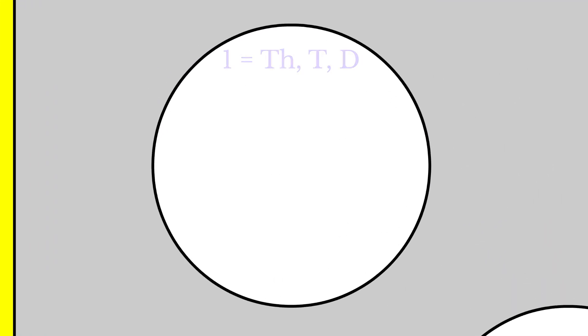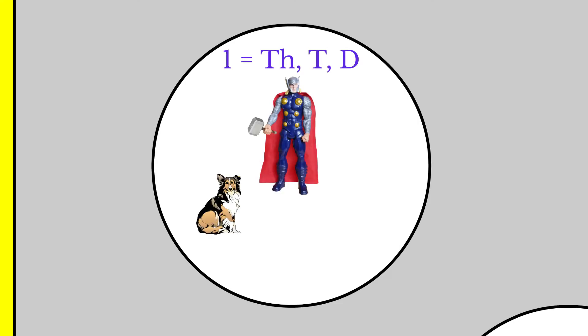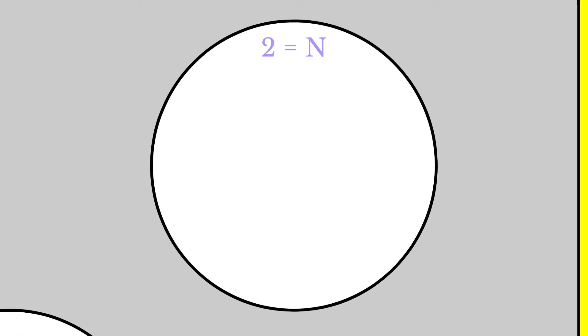Number one is replaced by th, t, and d sounds. Let's use Thor, a dog, and a tiger to remember these sounds. Th, t, and d. Number two is replaced by n sounds. We'll use a narwhal.